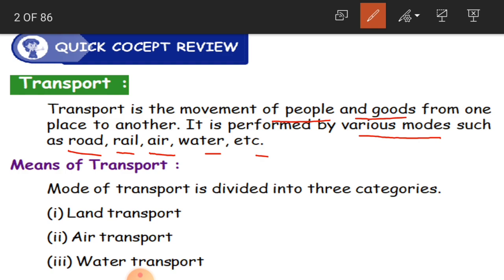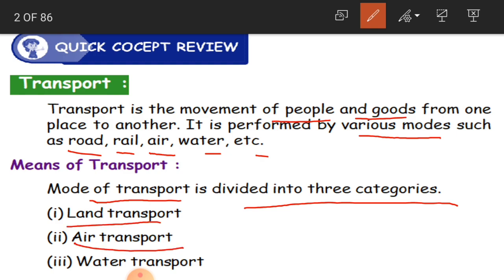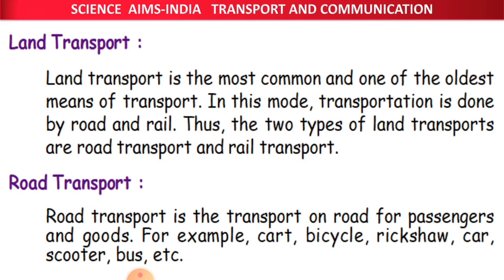The means of transport are divided into three categories: land transport, air transport, and water transport. Land is where we walk. Air transport includes aeroplanes in the sky. Water transport is through rivers and seas. These three modes of transport are very helpful for people and goods to be transported from one place to another.